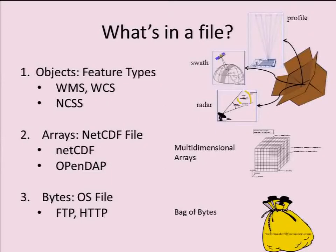Another way to say the same thing: when you have a scientific data file, at the lowest level you've got a bag of bytes and you can serve it through FTP or HTTP. Through NetCDF or OpenDAP, you've got a collection of multidimensional arrays. The best level is when you imagine what you've really got is a collection of objects in that file, and you can subset those objects in coordinate space — for example, give me all the profiles in this bounding box over Great Britain.